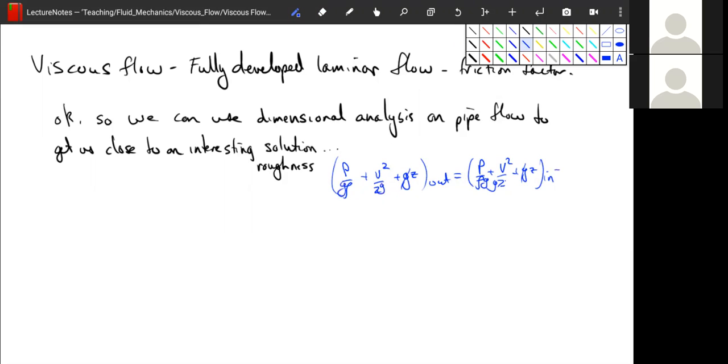And we add what we call h pump plus the sum of all of our h losses. Our goal for today is to get an estimate for what the h losses looks like for laminar flow.